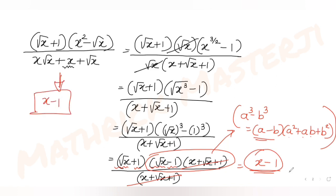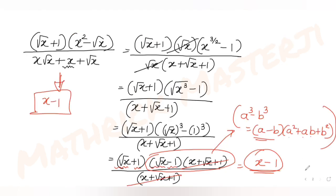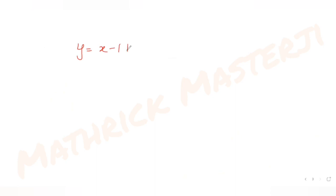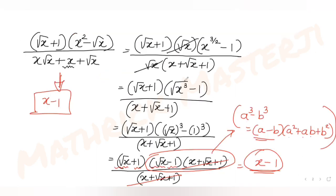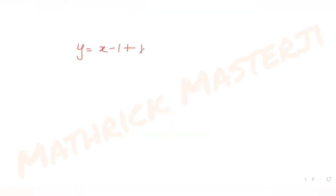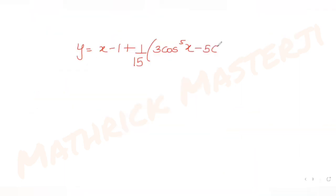Now that the algebraic part simplifies to x - 1, the full y function becomes: y = (x - 1) + (1/15)(3cos⁵x - 5cos³x).